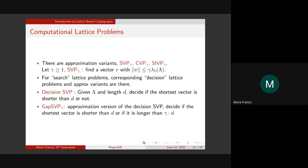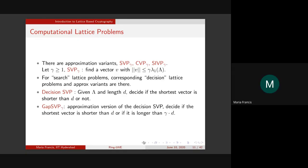In a two-dimensional space, you cannot have more than two linearly independent vectors. If the third vector gives you a point not generated by the first two, what may happen is you can generate another set of two vectors that will span the lattice of all three — not necessarily the original two, but another two vectors that span what is spanned by the three.